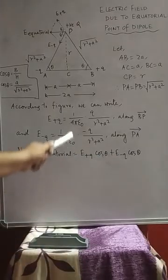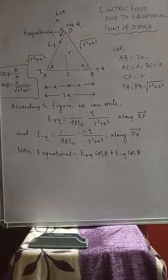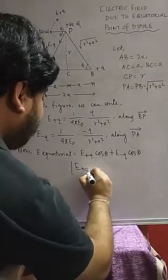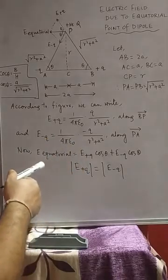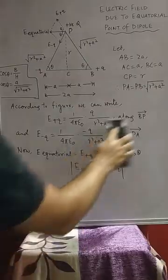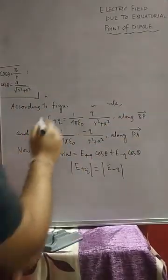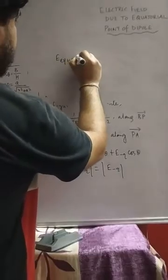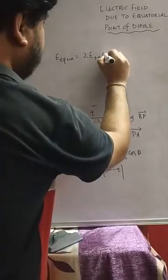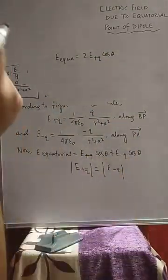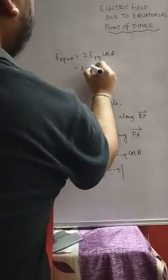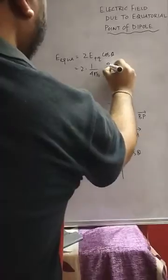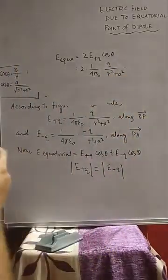At the equatorial point, E_equatorial = E+q·cosθ + E-q·cosθ. Since the magnitude of E+q equals the magnitude of E-q, we can write E_equatorial = 2·E+q·cosθ.